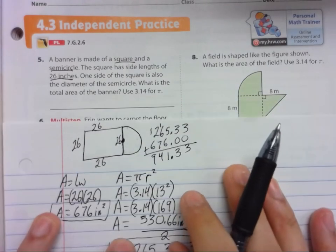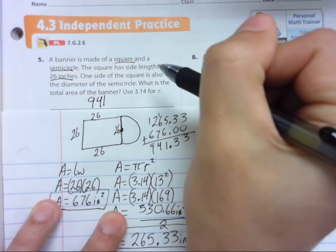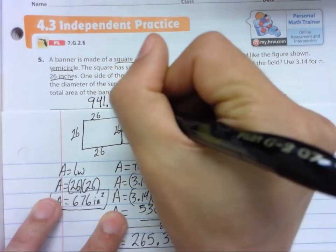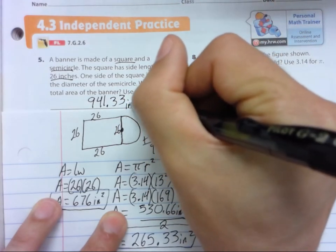So that will be our answer. 941.33. Don't forget your units. Square inches.